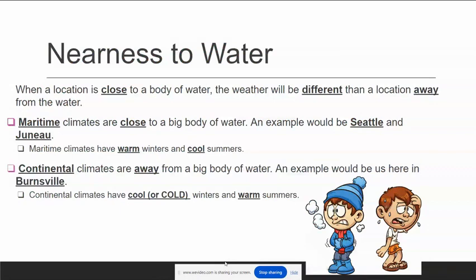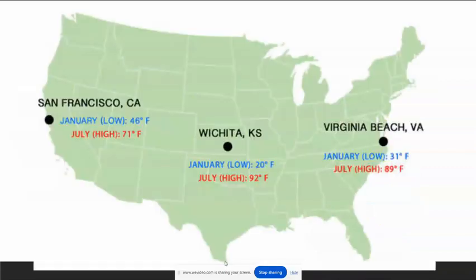Nearness to water is the moderating effect we saw in the other video as well. Areas close to water tend to have a moderate climate, meaning they don't get as hot or as cold as continental areas — places away from water.